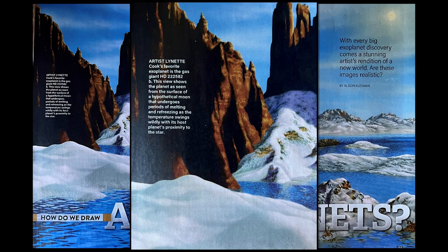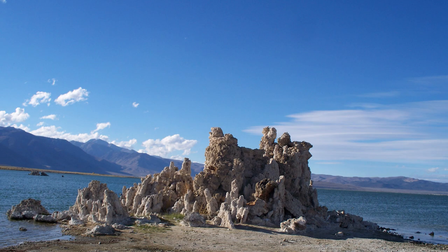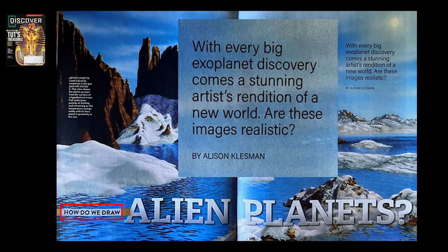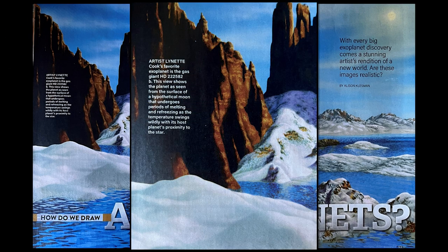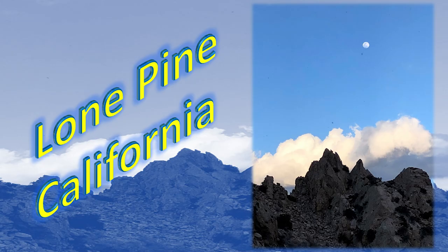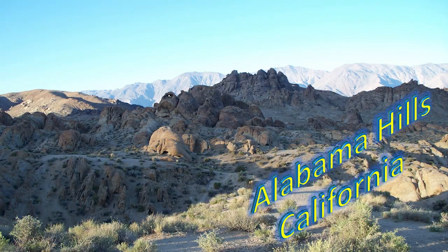Just like this Discover magazine — they have a very realistic-looking image there. It kind of looks like Mono Lake with the tufa pinnacles. But look what it says: 'How do we draw alien planets?' With every big exoplanet discovery comes a stunning artist rendition of a new world. They can't be realistic because they can't see them — they're just interpreting what they want it to look like. A lot of these pictures are very similar to western desert landscapes in California, Utah, and Arizona.